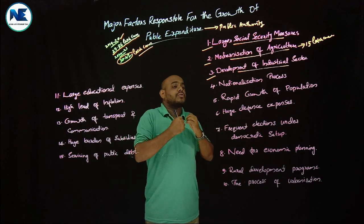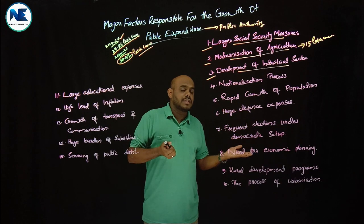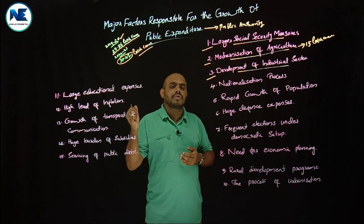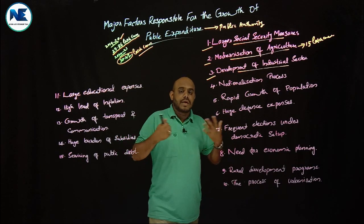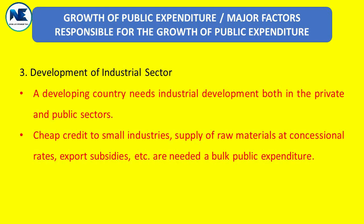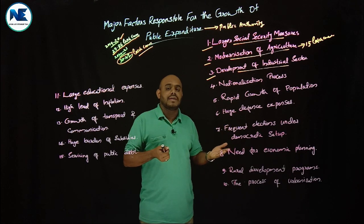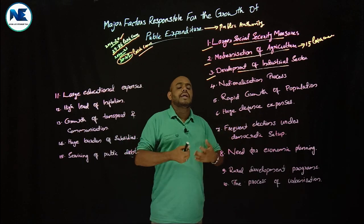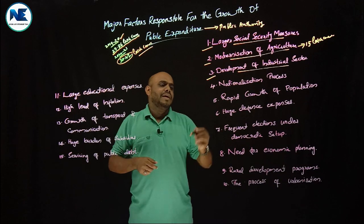The third point is the development of the industrial sector. Industries are set up under the public sector or public-private partnership model. This is very important for employment generation, infrastructure development, and the economic development of the country. Institutions like SIDBI — Small Industries Development Bank of India — IFCI (Industrial Finance Corporation of India), and IDBI (Industrial Development Bank of India) also led to the growth of public expenditure in India.